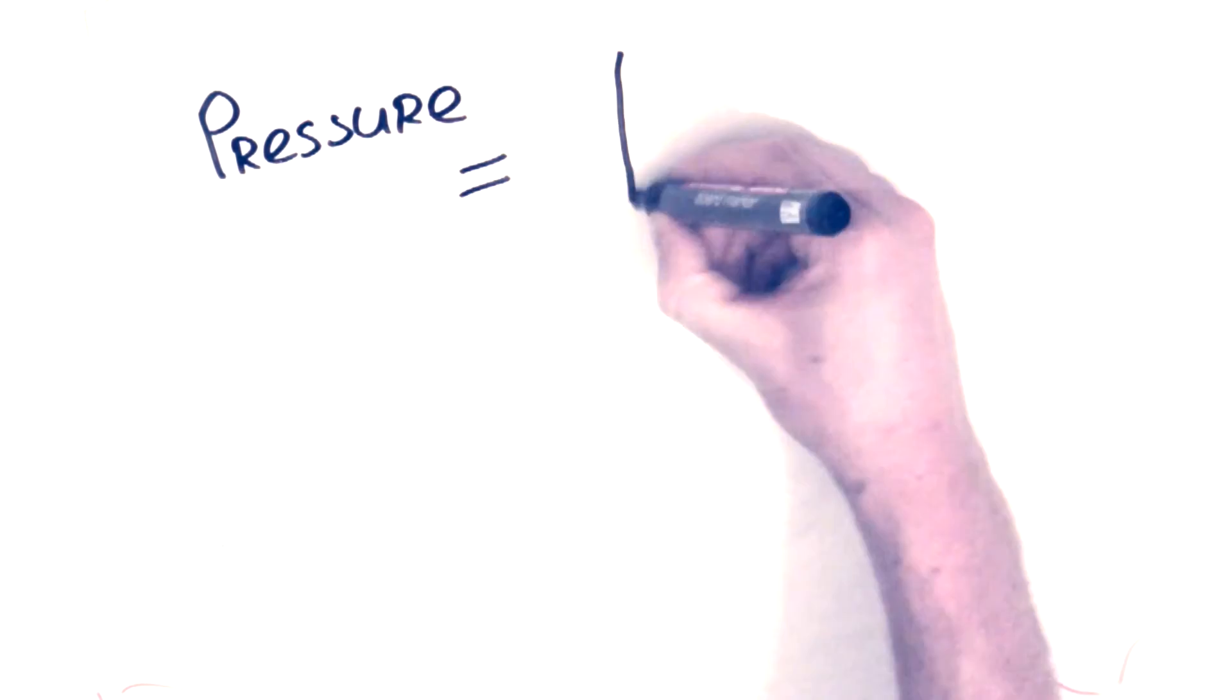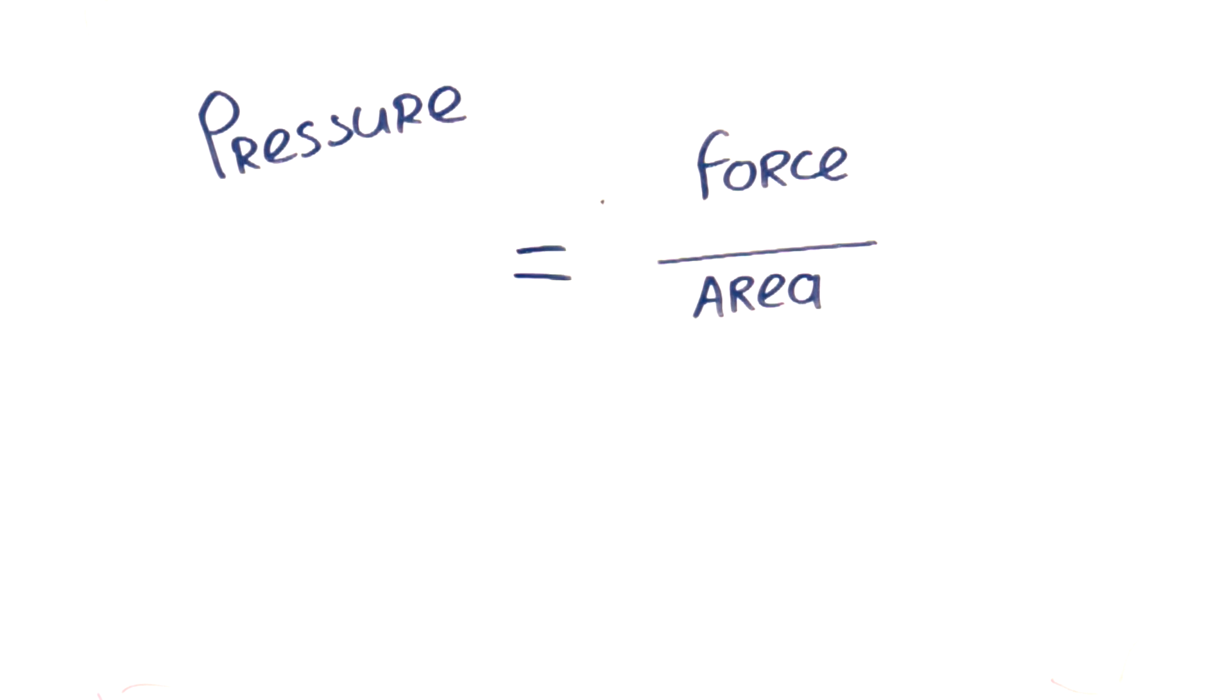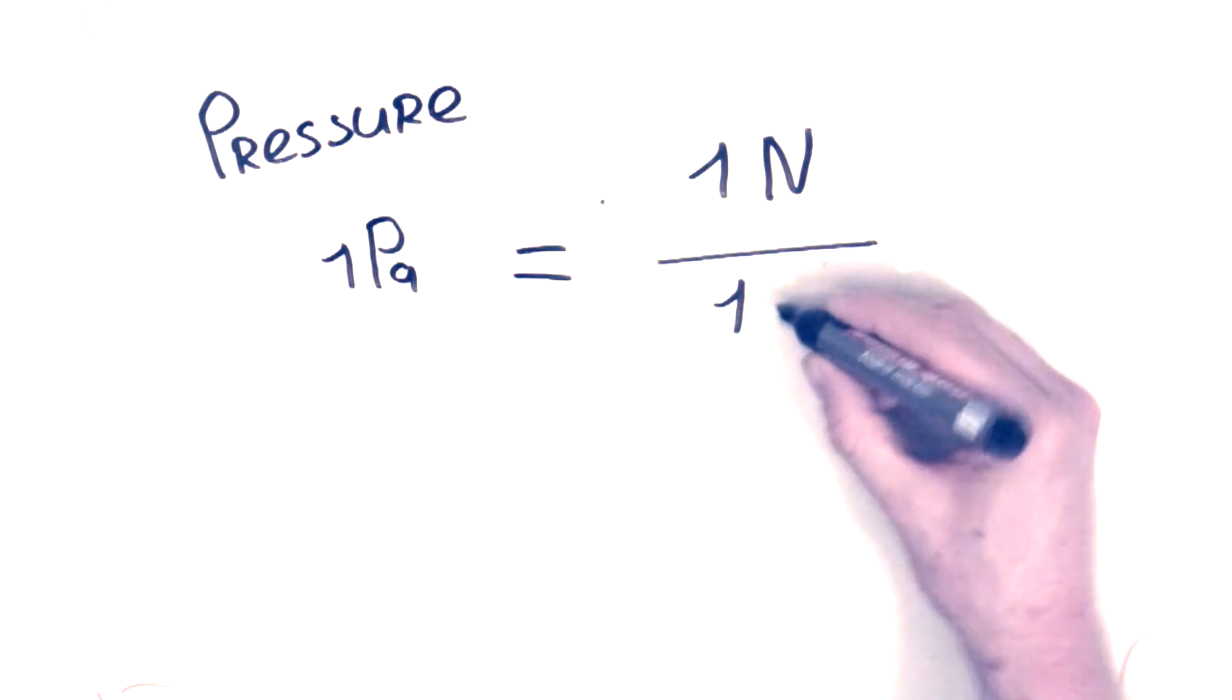This all comes down to pressure. Pressure is the force applied to an object per unit area. Pressure is measured in pascal, where 1 pascal is equal to 1 newton per 1 square meter.